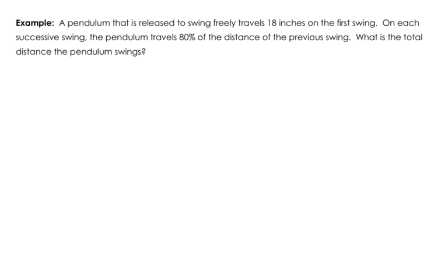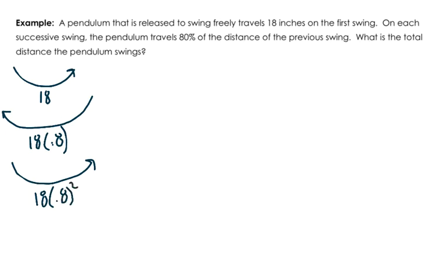Alright. A couple application problems here. A pendulum that is released to swing freely takes 18 inches on the first swing. So I mean, think about a pendulum. The pendulum is going to go like it's going to swing one way. And it says it's going to travel 18 inches on its first swing. Then it's going to swing back the other way. So on each successive swing, the pendulum travels 80% of the distance of the previous swing. So this time it's, you know, still went 18, but it only went 80% of the previous time. It's going to come back again this way. So this time, it's going to go, you know, still 18, but 80% of the previous swing. So now I've got 0.8 times 0.8. It's going to swing again. So I've got 18, it's only going to go 0.8 of its previous swing. So now I've got three of these 0.8s. And it's going to keep going and going and going and going.